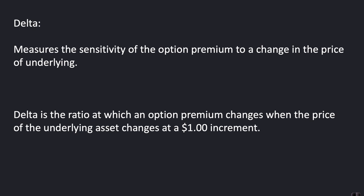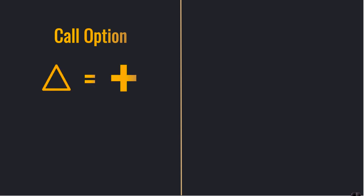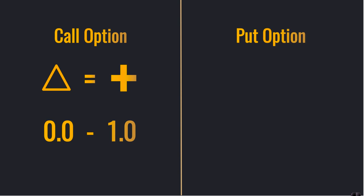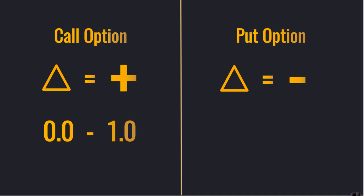Delta is the ratio at which an option premium changes when the price of the underlying asset changes at a $1 increment. A call option when you buy it has a positive Delta that ranges between 0.0 and 1.0. A put option on the flip side when you buy it has a negative Delta that ranges between 0.0 and negative 1.0.